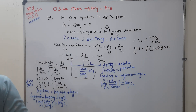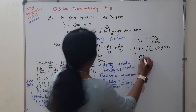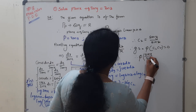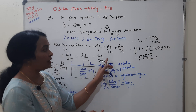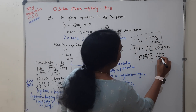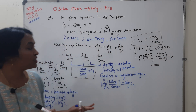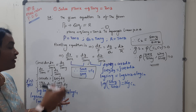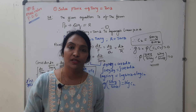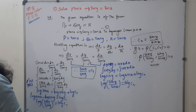The general solution is φ(c1, c2) = 0, or equivalently f(c1, c2) = 0. Substituting c1 = sin(x)/sin(y) and c2 = sin(y)/sin(z), the general solution is φ(sin(x)/sin(y), sin(y)/sin(z)) = 0. This completes Problem 1 using the method of grouping.